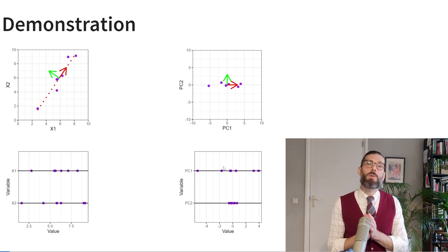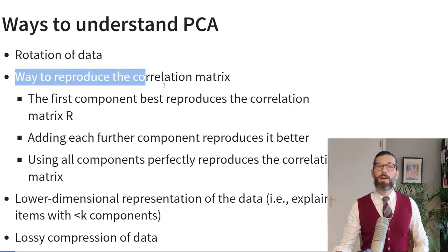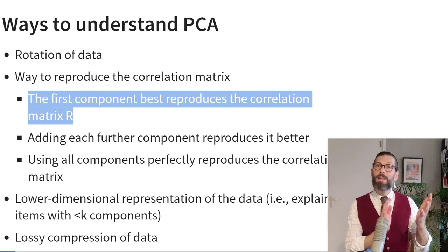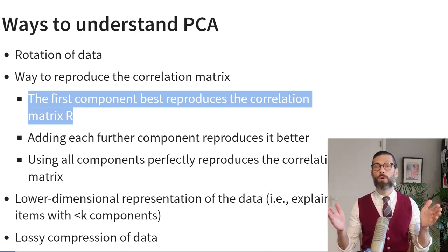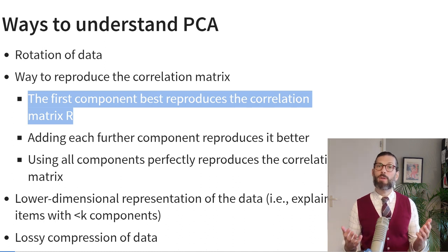Principal component one explains most of the variance in both x1 and x2, and principal component two probably contained mostly error variance. There are several ways to understand PCA. One is as a rotation of the data in space. The second is as a way to reproduce the original correlation matrix between items — the first component provides the best possible approximation of that correlation matrix, and adding each subsequent component results in a better reproduction until all components are included. You can also think of PCA as a lower-dimensional representation of the data, explaining k items with fewer than k components — a kind of lossy compression of the data.